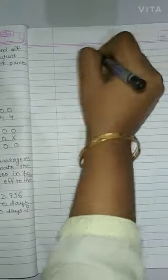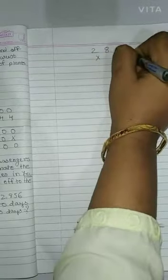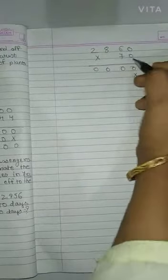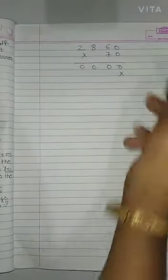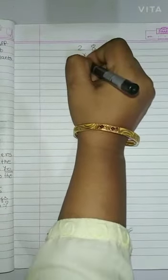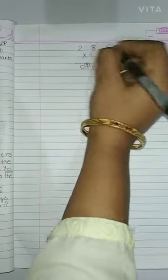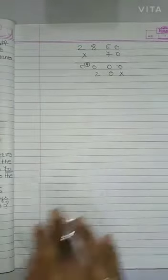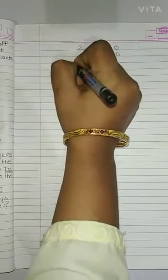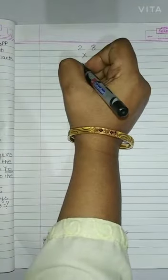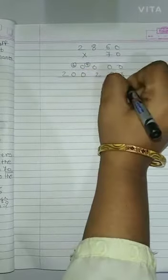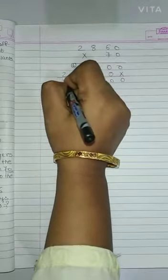2860 multiply with 70. 0, 0, 0, 0, because when we multiply any number by 0, we get 0. 7 sixes are 0, 7 sixes are 42, 7 eights are 56, 56 and 4 is 60, 7 twos are 14, 14 and 6 is 20.